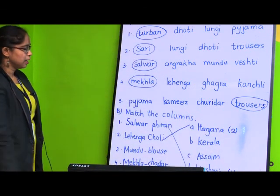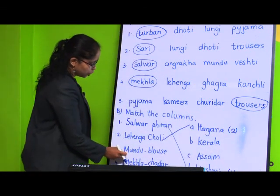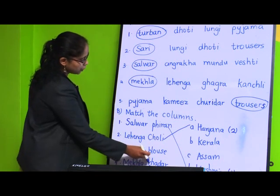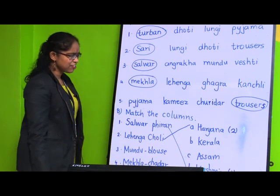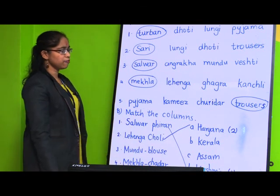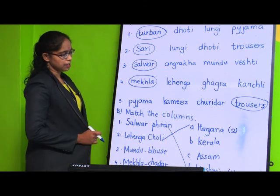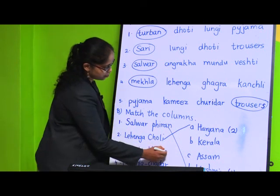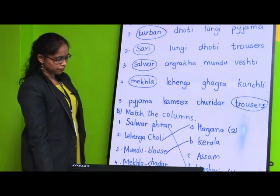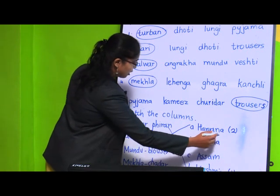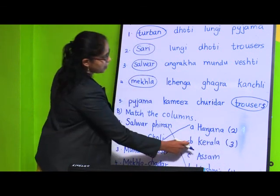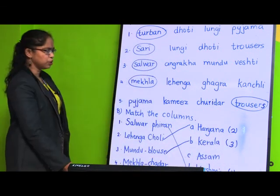Third one is mundu blouse. It is worn in Kerala. What will be the answer? Kerala - write number 3, or you can do the underline. Both options are fine.